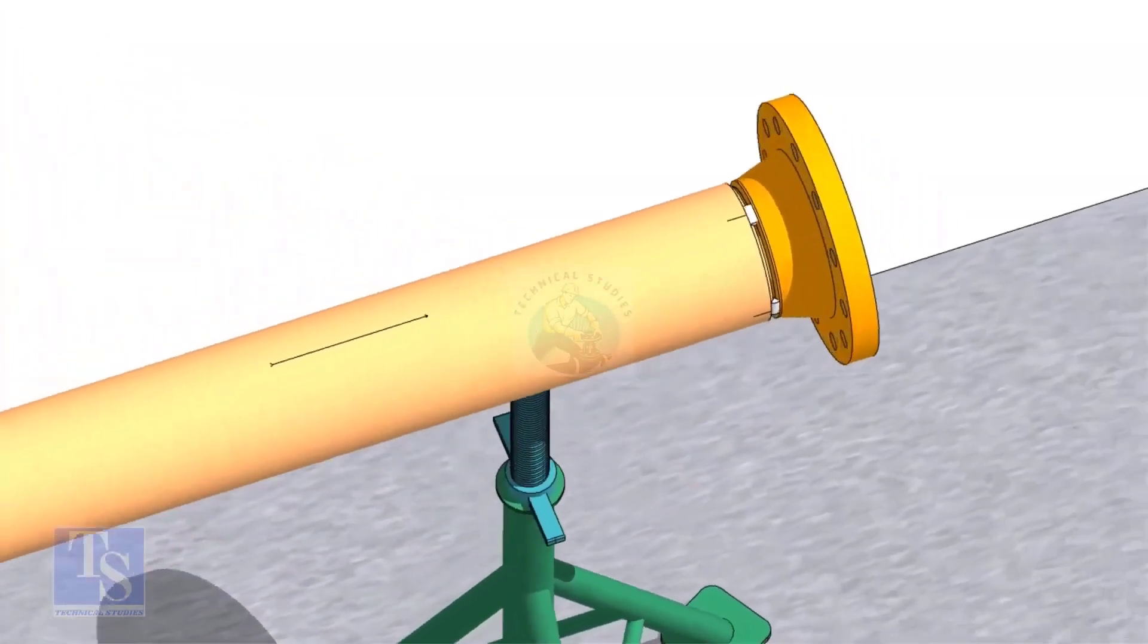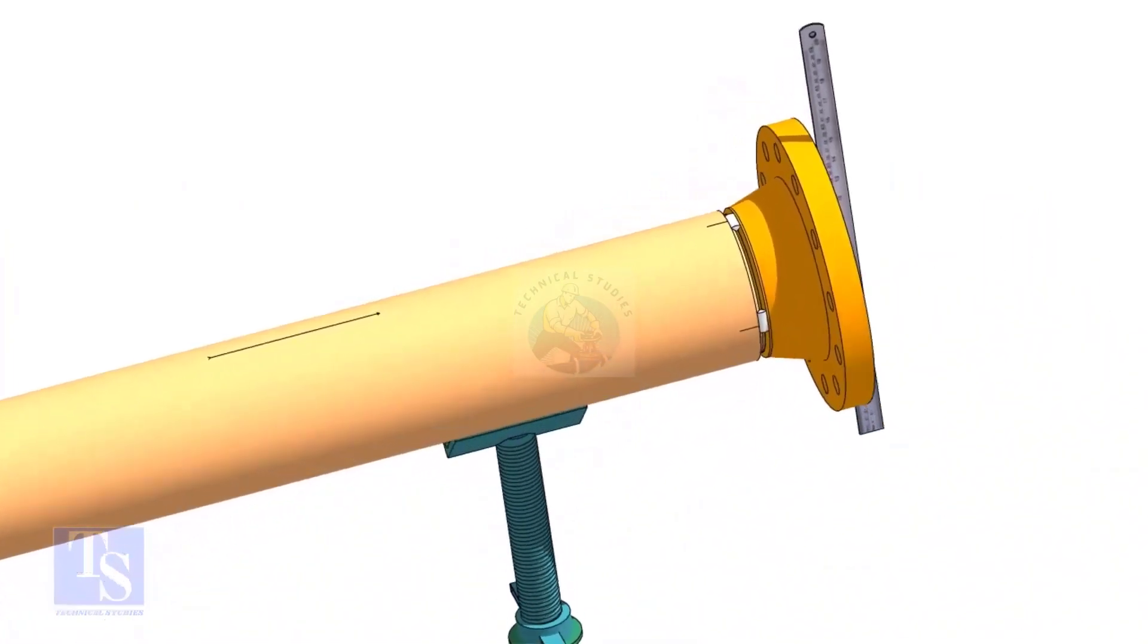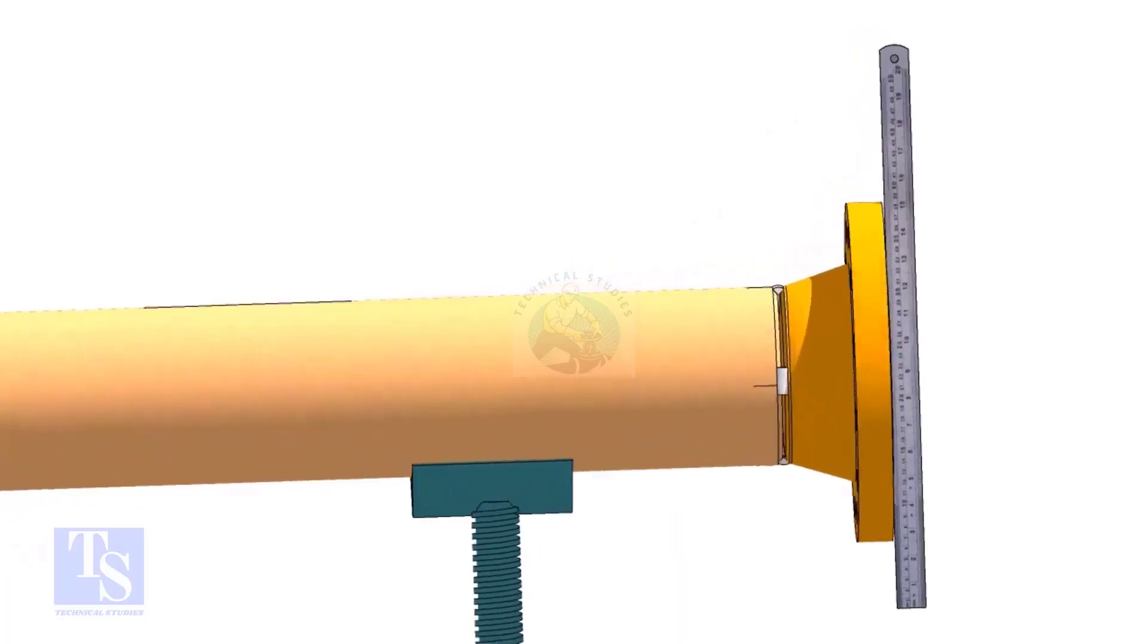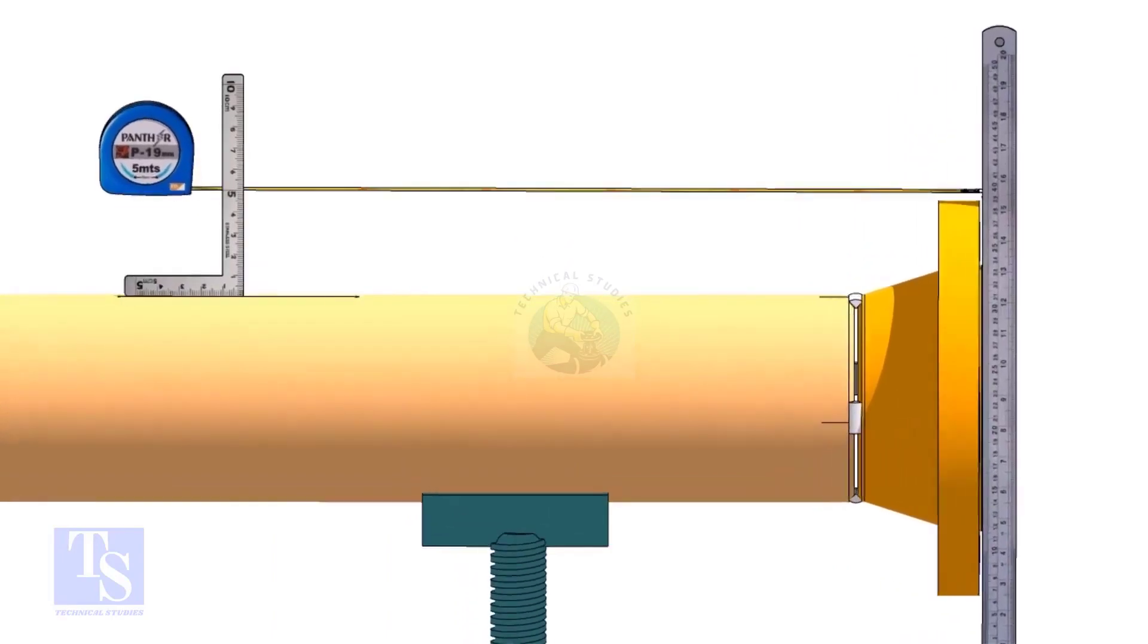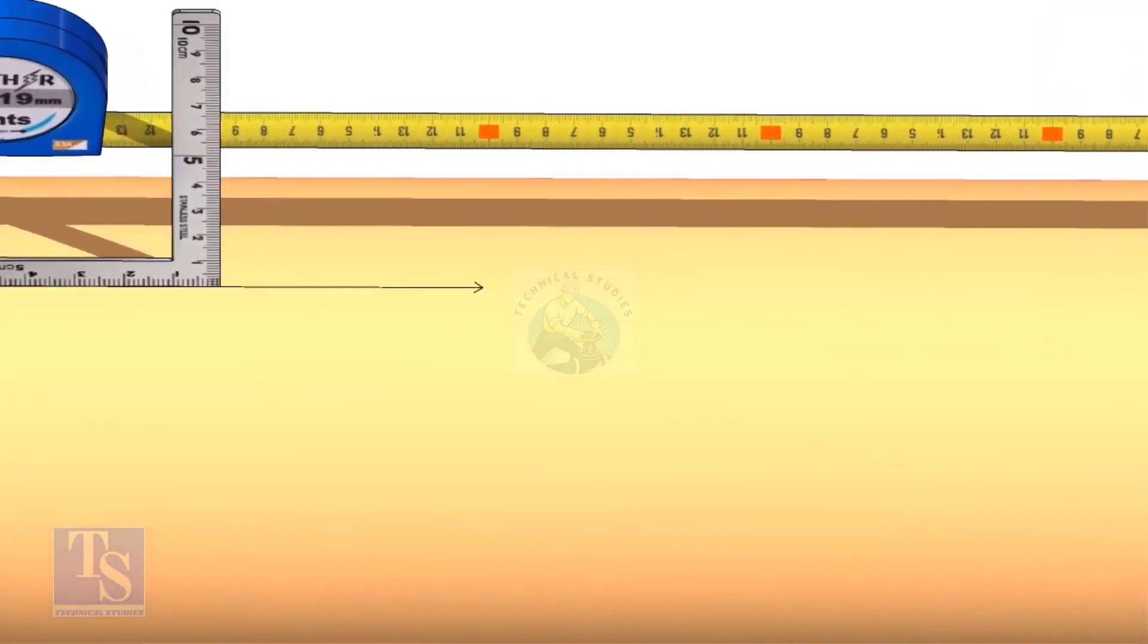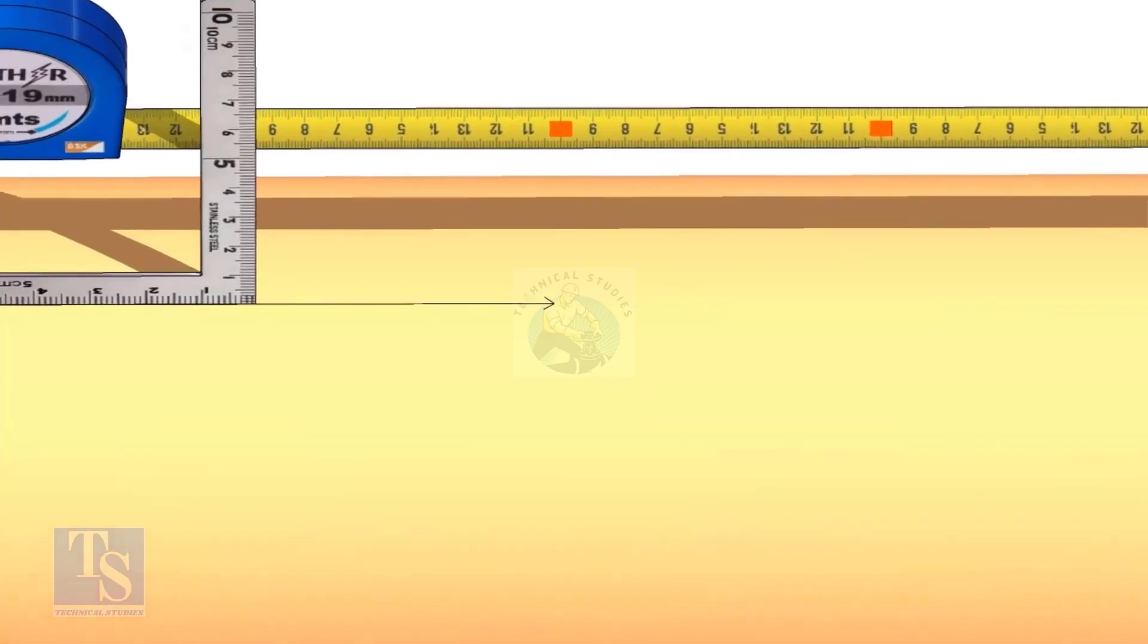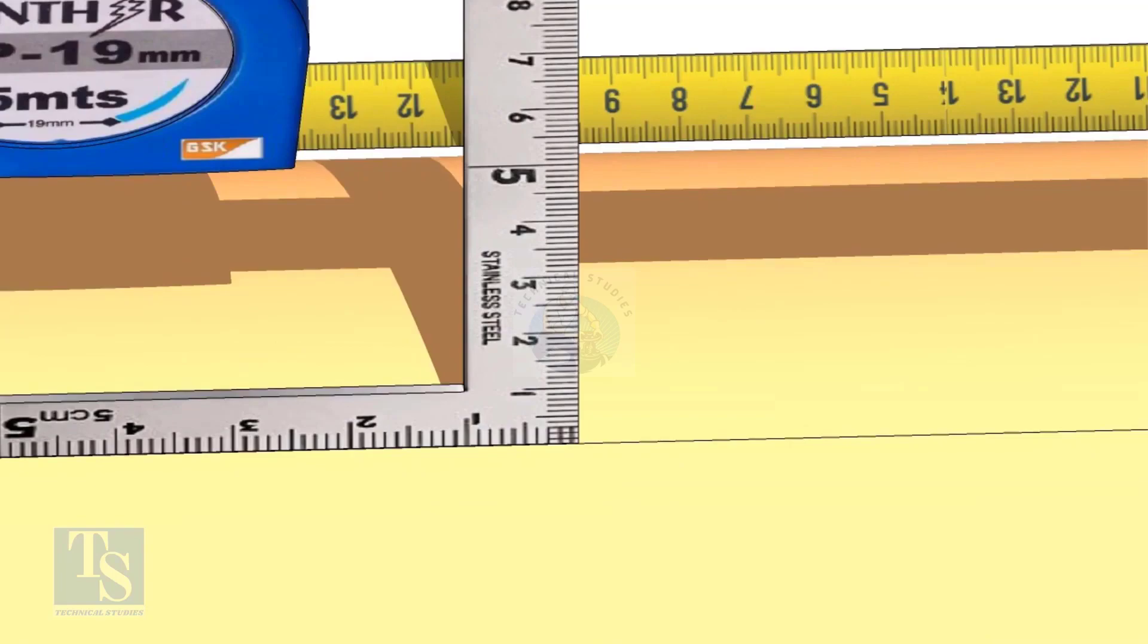Hold a steel ruler on the face of the flange vertically. Put a right angle on the pipe where the line is drawn. Move the right angle until the edge comes on 595mm on the tape. Mark on the pipe where the right angle edge touches.